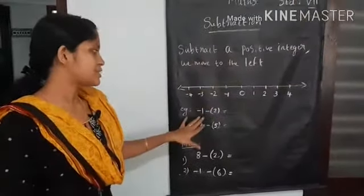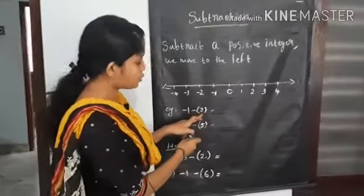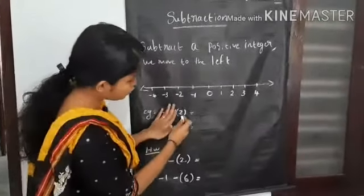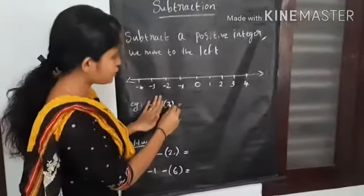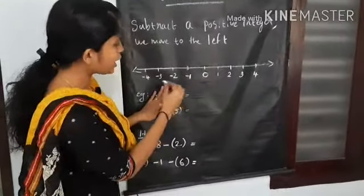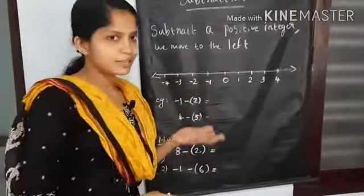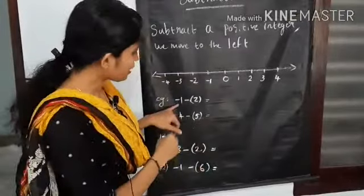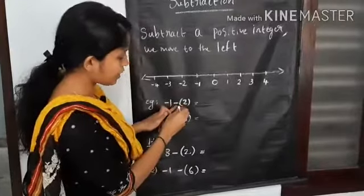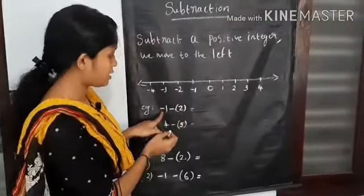Let's see with an example. The first example is minus 1 minus 2. Here we are going to subtract 2. 2 is a positive integer. We are going to subtract 2, and here I took minus 1. This is the sign of subtraction. Subtract 2 from the number minus 1.